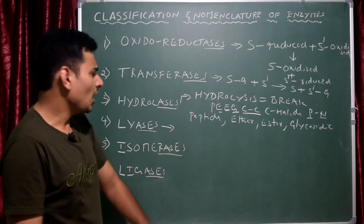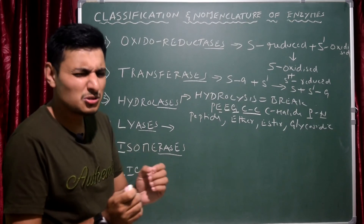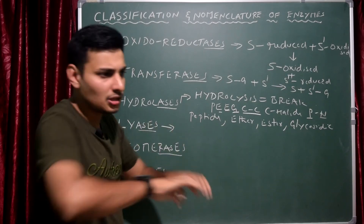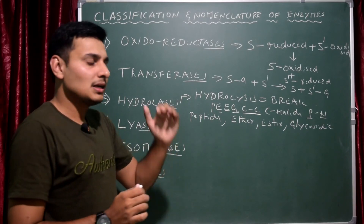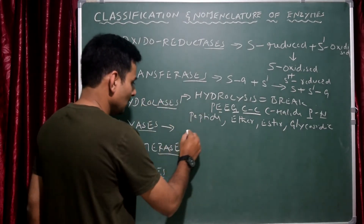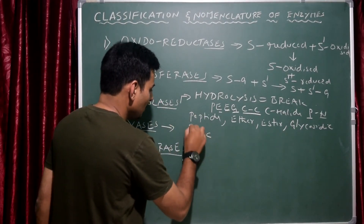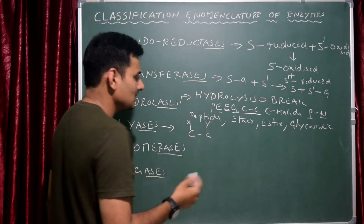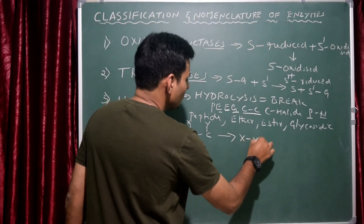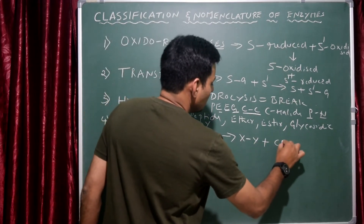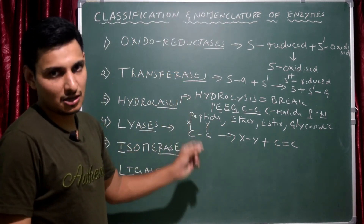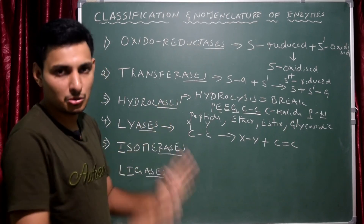Now, this is the lyase function. Lyase function is almost equal to hydrolase function, but there is a difference — they will not bring hydrolysis. What they do is they remove the group. When they remove the group, carbon-carbon bonds become carbon-carbon double bonds. So for example, CC — this is the lyase enzyme — the CC separates, leaving double bonds. That is other than hydrolysis. Hydrolysis is not involved; they just remove the group.